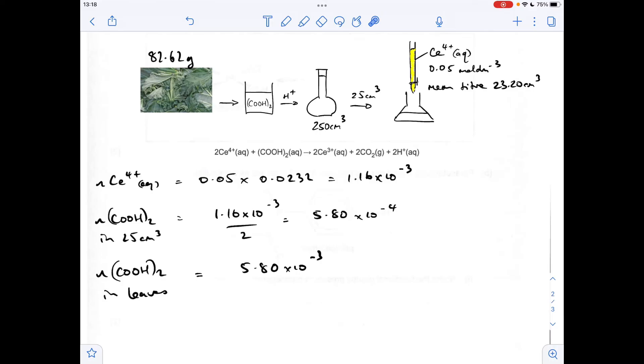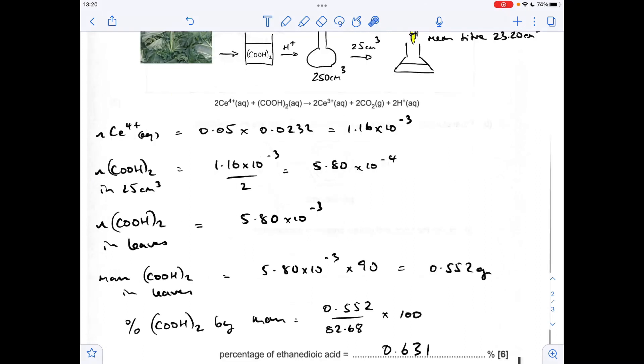So to convert that to grams, we multiply that by the MR of ethanedioic acid, which is 90. So there's that many grams of ethanedioic acid in the 82.62 grams of leaves. So obviously as a percentage, it's going to be that divided by that times 100. So there's the answer there. I'm giving it to three significant figures. That's appropriate because the lowest number of significant figures in all of the data supplied is 3.